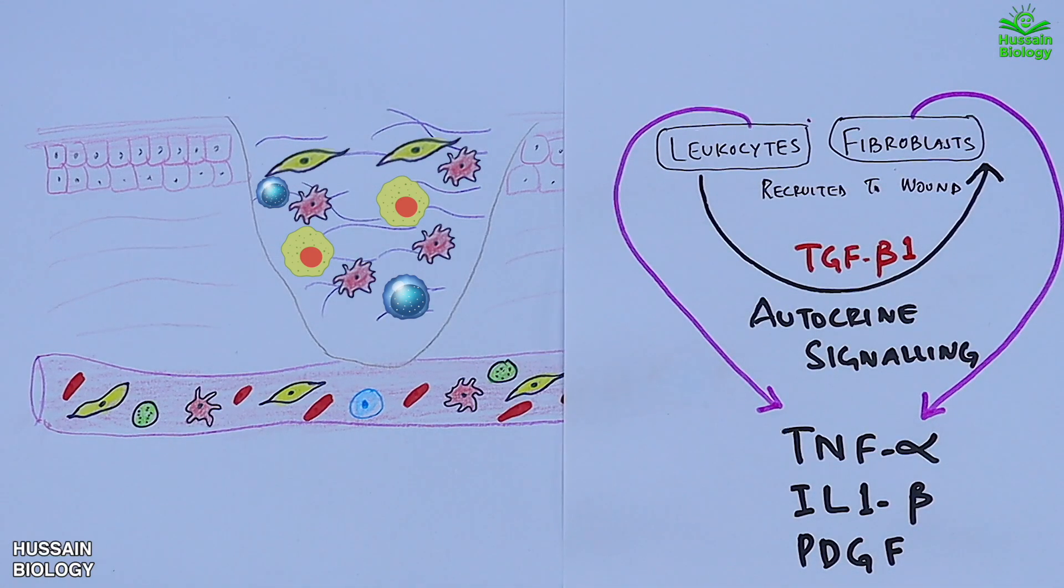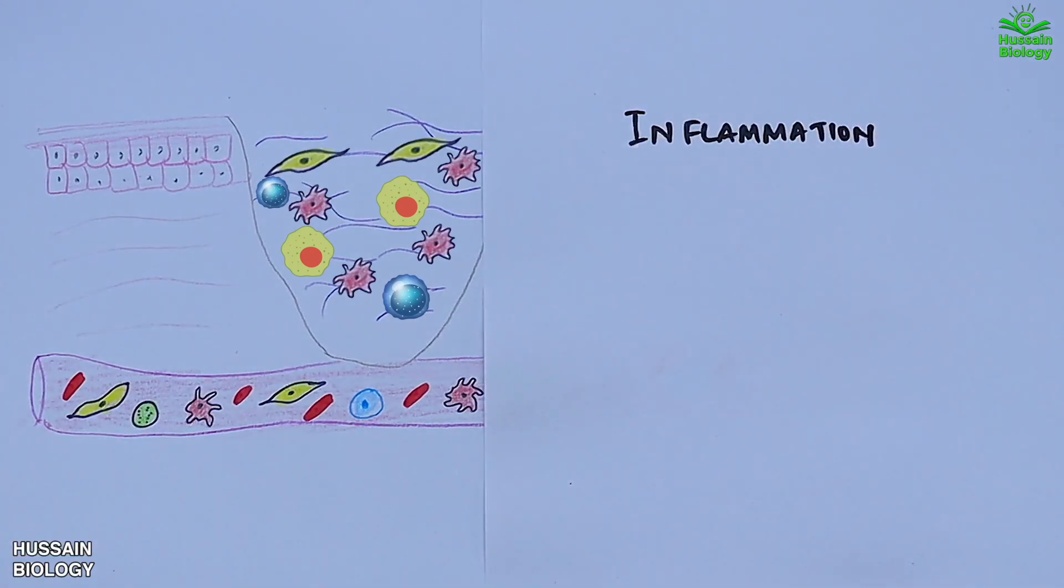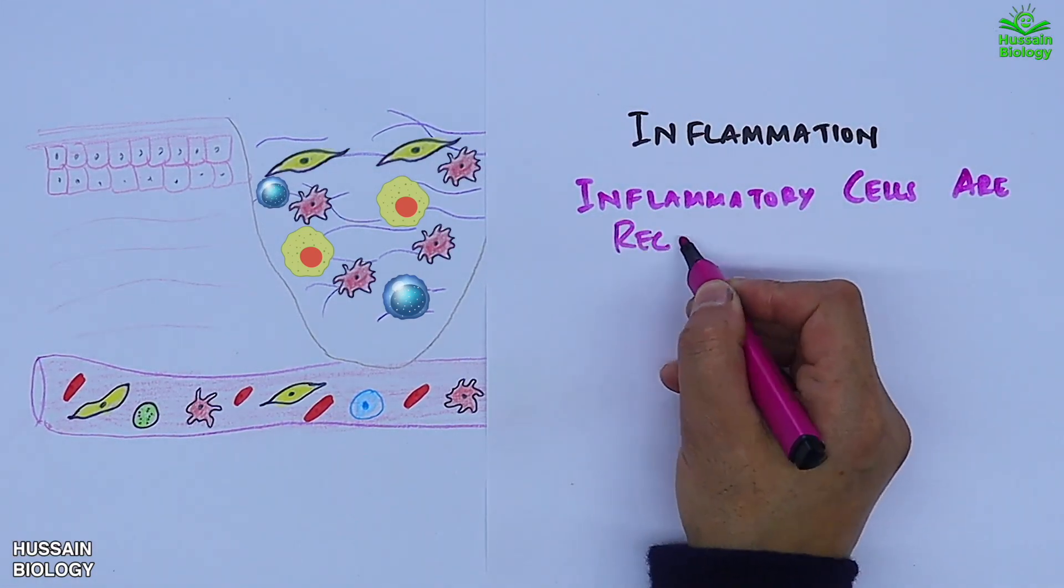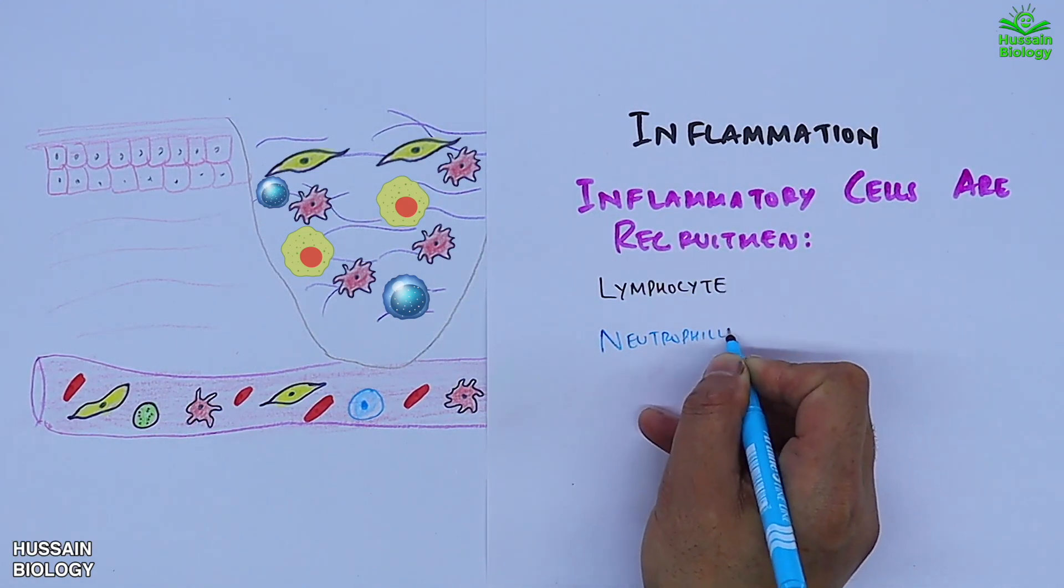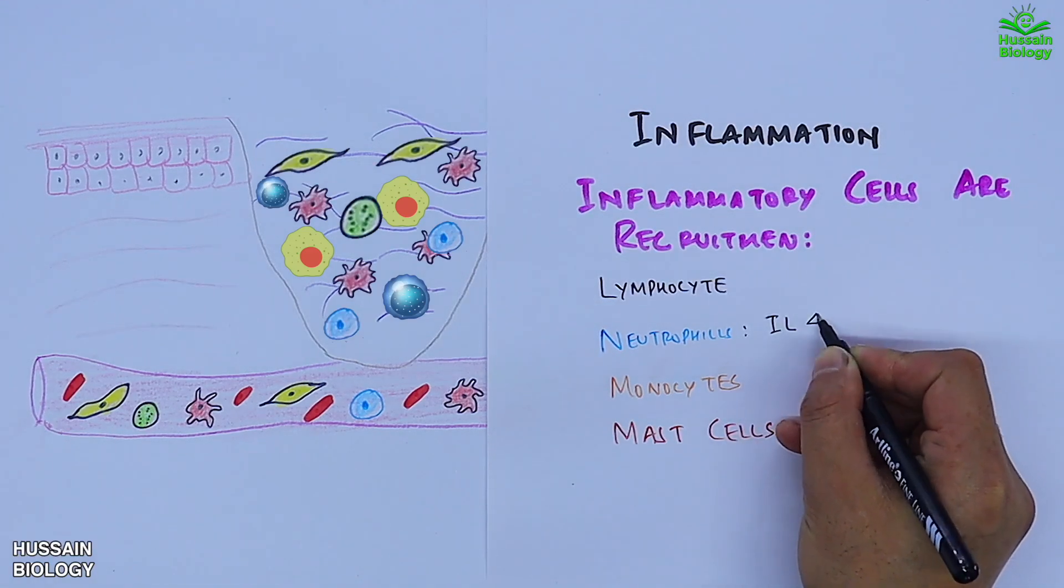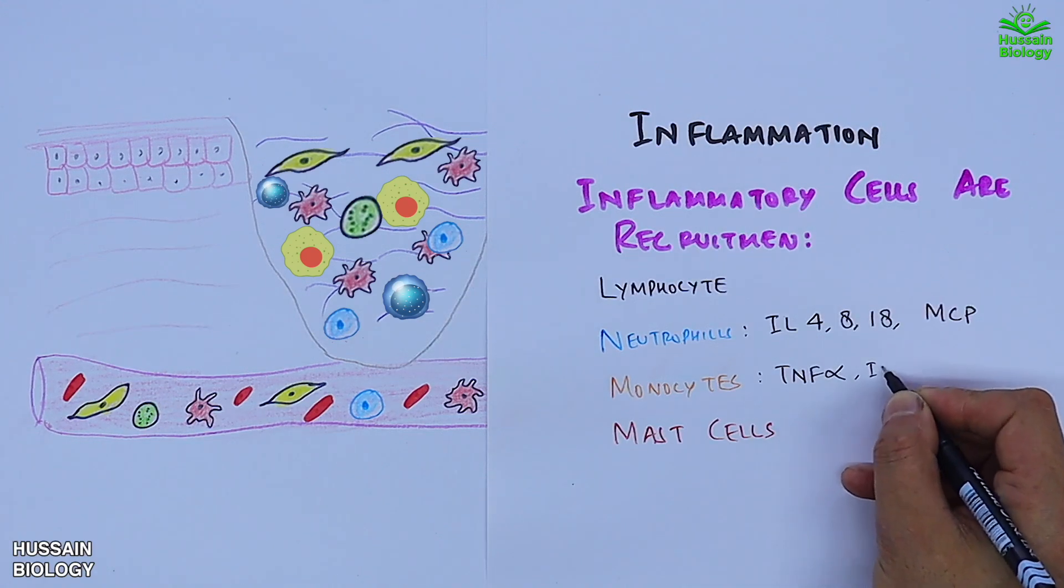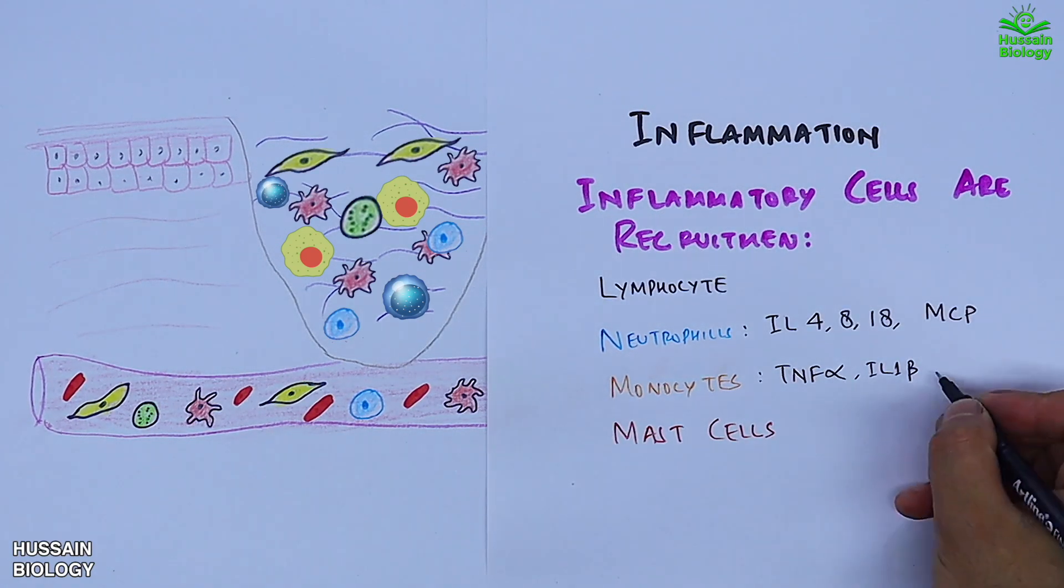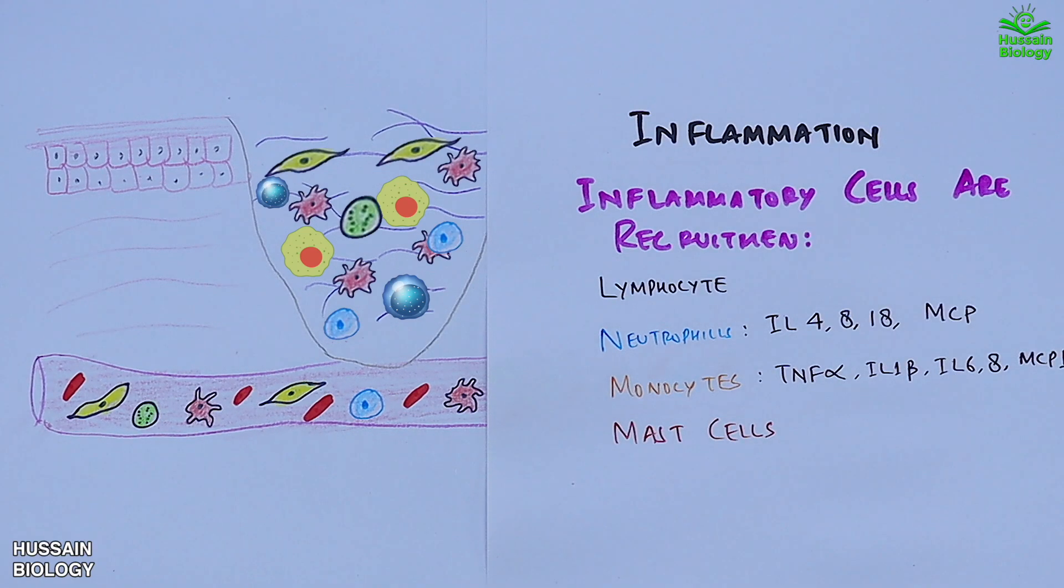Moreover, in this inflammation step, more inflammatory cells are recruited. We see the recruitment of lymphocytes, neutrophils, monocytes, and mast cells shown in the diagram. We see the neutrophils secrete interleukin-4, 8, 18, and MCP. Then the monocyte secretes TNF-alpha, interleukin-1-beta, interleukin-6, interleukin-8, and MCP-1.